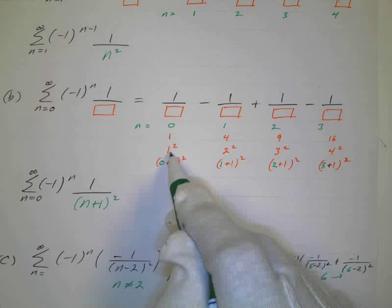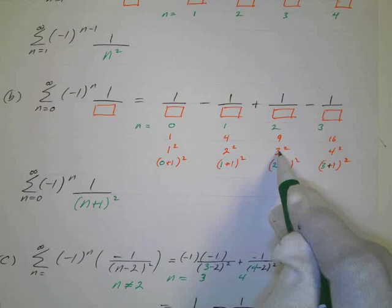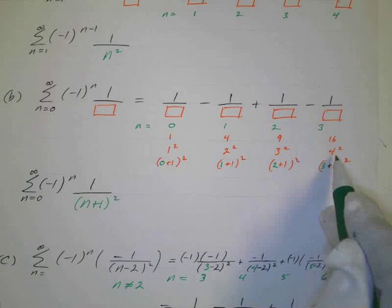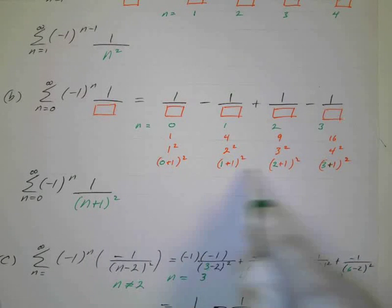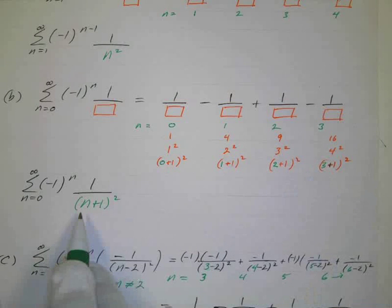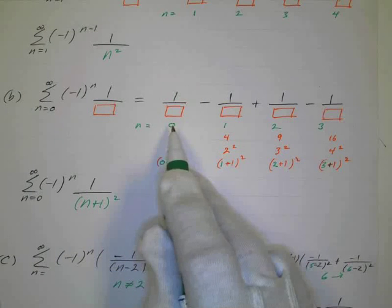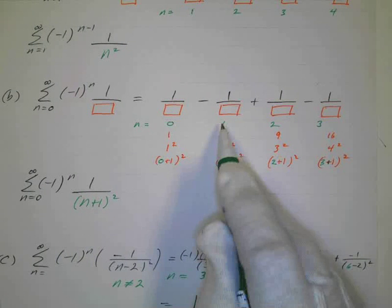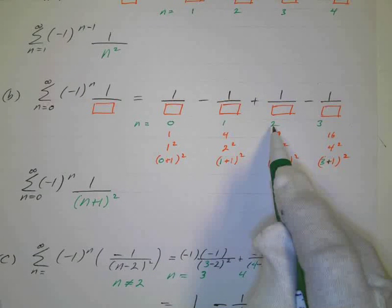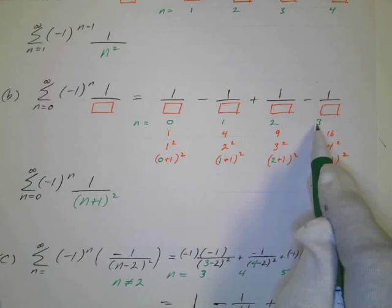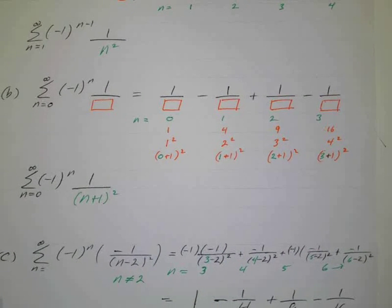So relative to 0, 1 squared is 1 more. 2 squared is 1 more than 1. 3 is 1 more than 2. And 4 is 1 more than 3. So I just took my n, whatever my n was, and I added 1 and squared that. So it ends up being n plus 1 squared. 0 plus 1 squared is 1, 1 squared is 1. 1 plus 1 is 2, 2 squared is 4. 2 plus 1 is 3, 3 squared is 9. 3 plus 1 is 4, 4 squared is 16.